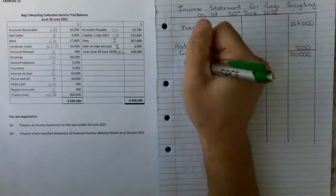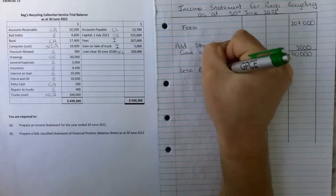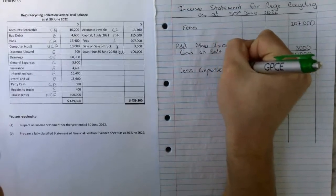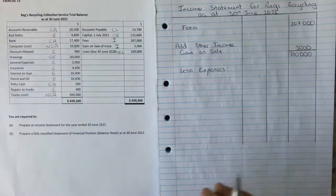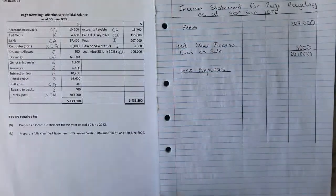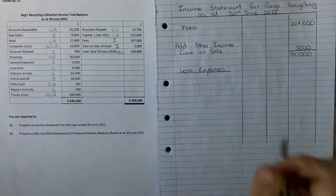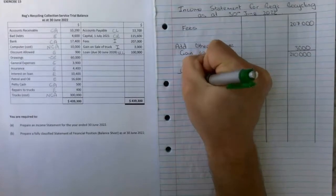Then we're going to minus off our expenses, so we're going to list our expenses. We can go through the left-hand side and work through the process. They're already in alphabetical order which makes it really easy for us.